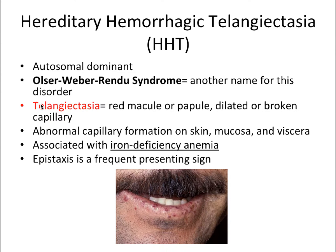Telangiectasias are red macules or papules due to dilated or broken capillaries. Comparing them to pigmented lesions like petechiae, purpura, and hematoma — all those are extravascular, meaning blood leaks out into tissue and you cannot blanch those lesions with the diascopy test. With telangiectasias, you can blanch them because the blood is still intravascular — still in the vessel. If you push on them, they become pale, and when you release pressure, they fill back up and become red again.